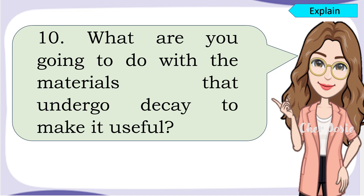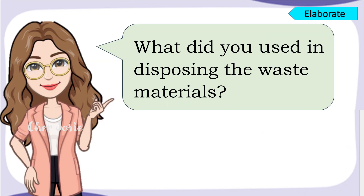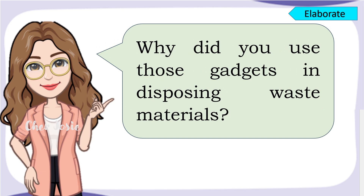What are you going to do with the materials that undergo decay to make it useful? You're right! You make a compost. When you say compost, it is waste materials that are recycled as fertilizer. What did you use in disposing the waste materials? Correct! You can use gloves or masks. Why did you use those gadgets in disposing waste materials? Very good! You used them to avoid being punctured by sharp materials.